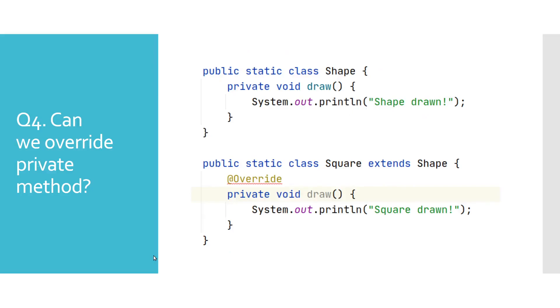Can we override private methods? Private methods are only accessible from the class where they are defined. As shown here, this draw method is only accessible from class Shape.